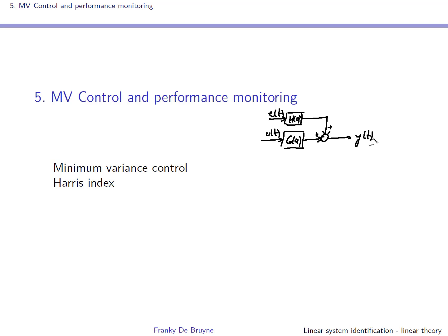This sidestep we are making is going to be one in control. Since you're all future control engineers, this might be interesting for you. The idea is to construct a controller that will determine the input of the system — we'll call it CQ — and we'll call it minimum variance.